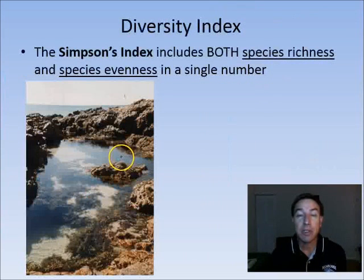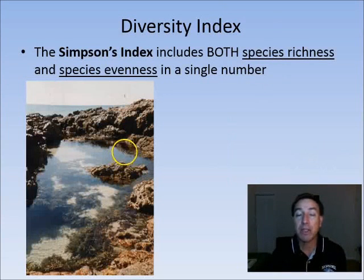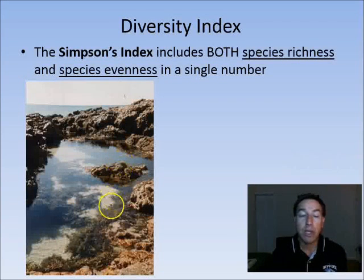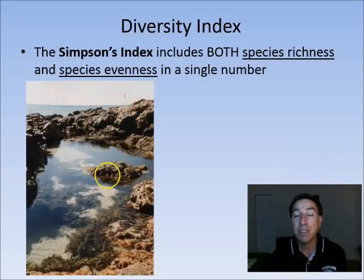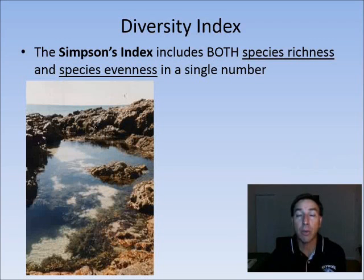We can use both of these together in the Simpson's index. The Simpson's index includes both species richness, the number of species, and how evenly distributed those species are in one single number. We can sample this tide pool, get all the organisms here, and we can get both species richness and species evenness, and then combine them in a Simpson's index. So let's see how Simpson's index works.